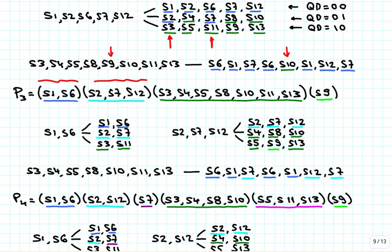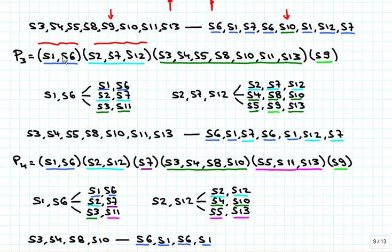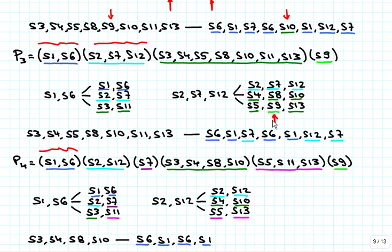Continuing, we look at the S1/S6 block and check 00, 01, and 10 successors again. The 00 successors are both in the same block, the 01 successors are in the same block, and the 10 successors are in the same block, so S1 and S6 will stay together. Then we look at S2, S7, S12, and find that the 00 successors are in the same block, but the 10 successors have one state in a different block, so we split that into {S2, S12} as one block and {S7} as a block by itself.